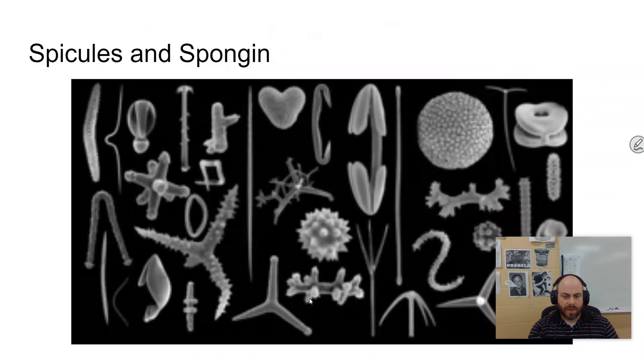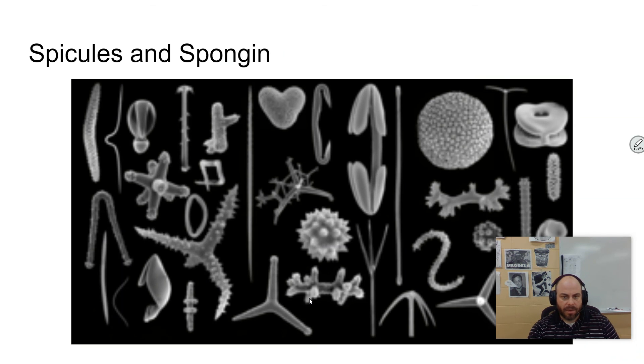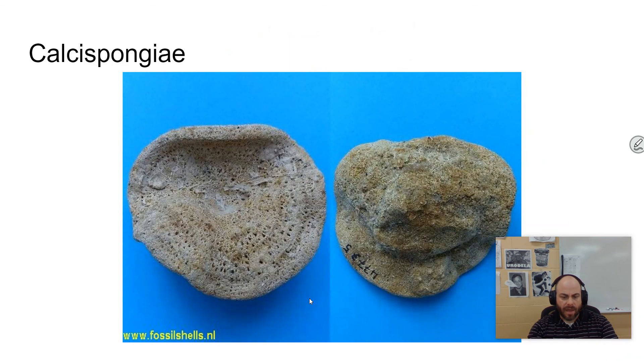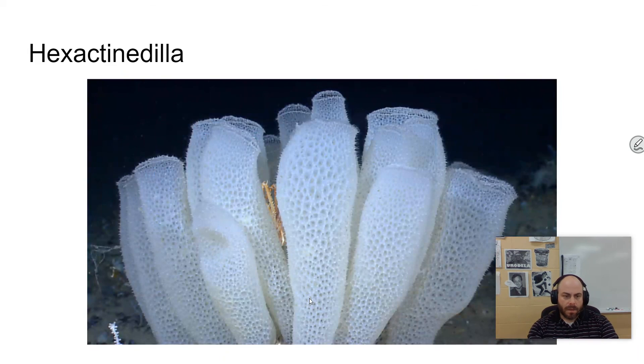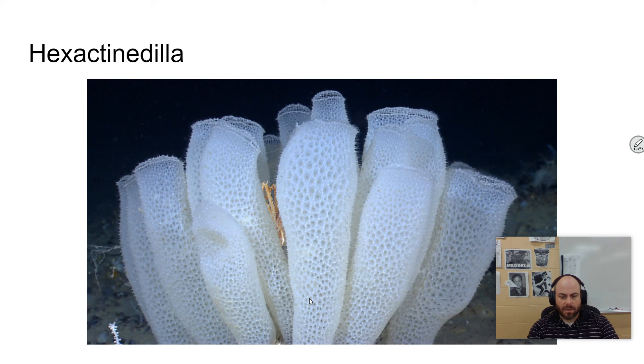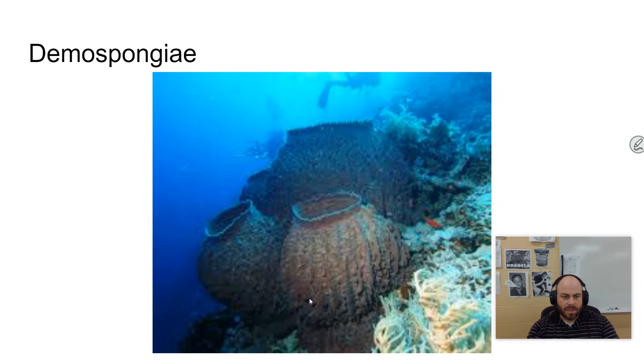The first sponge fossils date back to the early Cambrian period. So this is way back near the Cambrian explosion where the first animals came about. Sponges are divided into three classes. There is Calcispongia. Their claim to fame is that their spicules are made of calcium carbonate. There's Hexactinellida. Hexactinellida are glass sponges. And so we will talk about those. And then Demospongia. This represents 95% of the sponge species in the world.